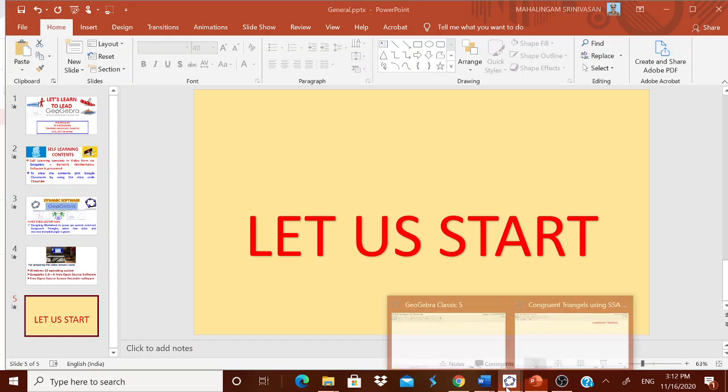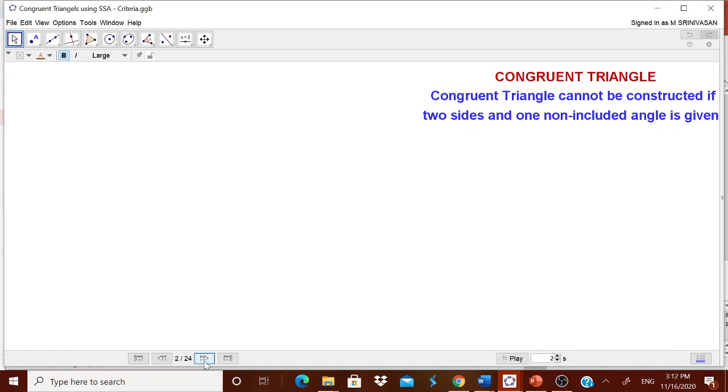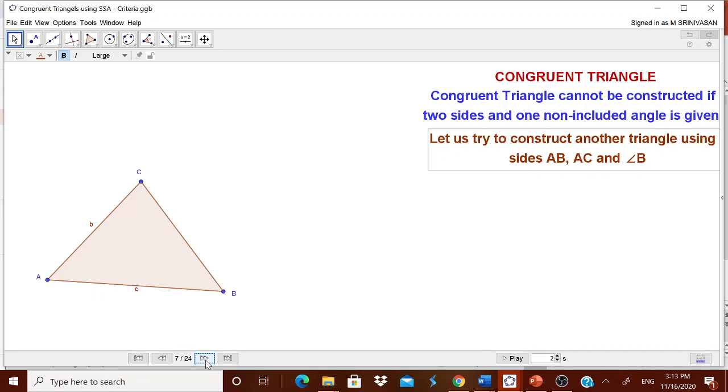Let me show you what type of worksheets we are going to prepare. We will tell them what do you mean by SSA criteria: congruent triangle cannot be constructed if two sides and one non-included angle is given. I will take one triangle and let me try to have another triangle to be constructed making use of AB, AC, and angle B which is a non-included angle.